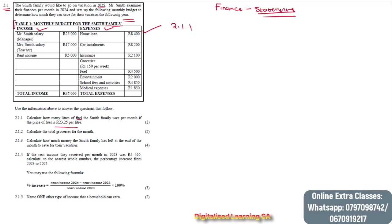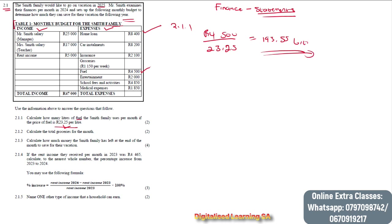We need to check how much they spent on fuel, and we can see that they spent R4,500. To calculate the liters, we divide by the price per liter, which is R23.25. So it's 4,500 divided by 23.25, which gives us 193.55 liters. That is the number of liters they used on fuel.